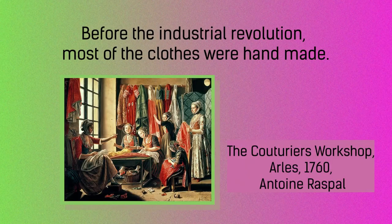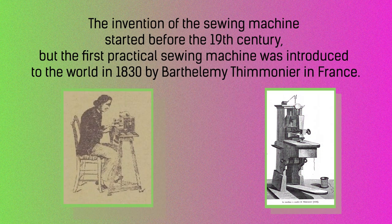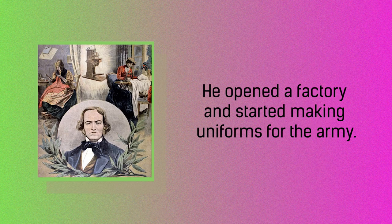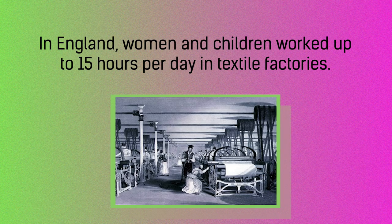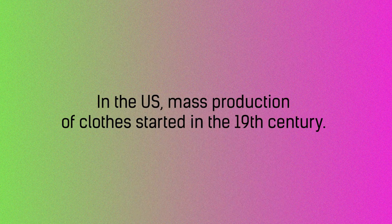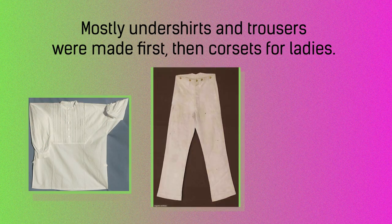Before the industrial revolution, most of the clothes were handmade. The invention of the sewing machine started before the 19th century, but the first practical sewing machine was introduced to the world in 1830 by Bartholomew Thimonnier in France. He opened a factory and started making uniforms for the army. It was demolished by tailors who feared for their business. In England, women and children worked up to 15 hours per day in textile factories. In the US, mass production of clothes started in the 19th century. Mostly undershirts and trousers were made first, then corsets for ladies.